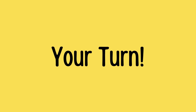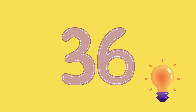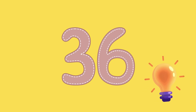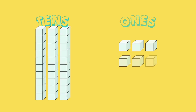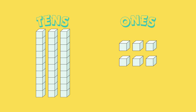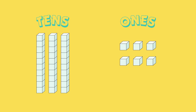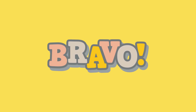Now, it's your turn. If I say the number 36, how many 10s and ones does it have? Think and tell me. You got it — 3 tens, which is 30, and 6 ones. See, you're already becoming a place value expert.